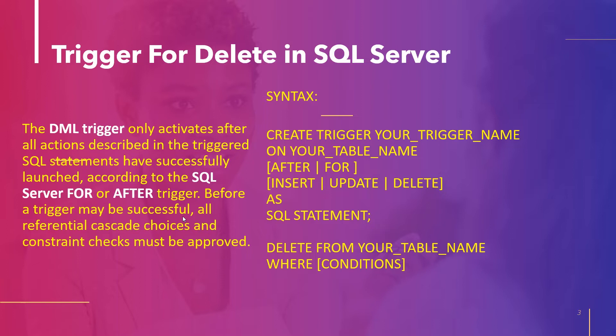In the syntax, first we write CREATE TRIGGER followed by your trigger name — the trigger name can be anything, like Michael Jordan or Obama, whatever you choose. Then we write ON followed by your table name, which specifies the table the trigger applies to. AFTER and FOR both have the same effect: when used with a DML statement, it first executes on the table and then the SQL statements inside the trigger run.